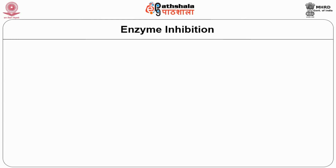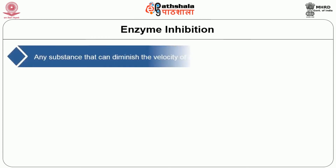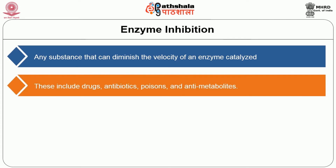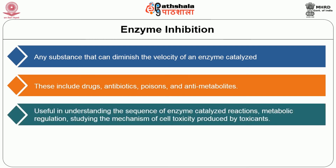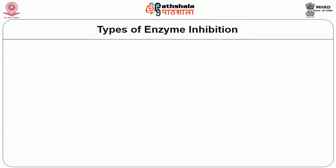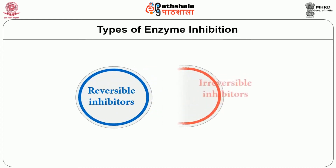The next important factor affecting enzyme rate is the presence of inhibitors. Any substance that can diminish the velocity of an enzyme-catalyzed reaction is called an inhibitor. This includes drugs, antibiotics, poisons, and anti-metabolites. They are useful in understanding enzyme-catalyzed reaction sequences, metabolic regulation, and mechanisms of cell toxicity produced by toxicants. Studies on enzyme inhibition form the basis of drug design. There are two types of inhibition: reversible and irreversible. Reversible inhibitors are further classified into competitive, non-competitive, and uncompetitive.